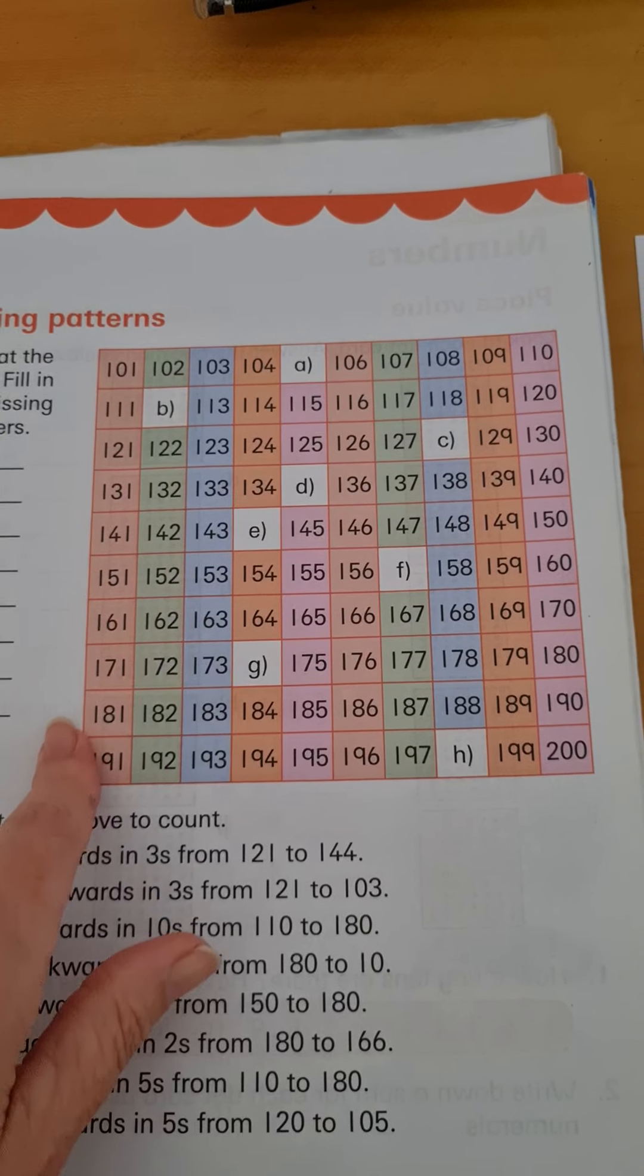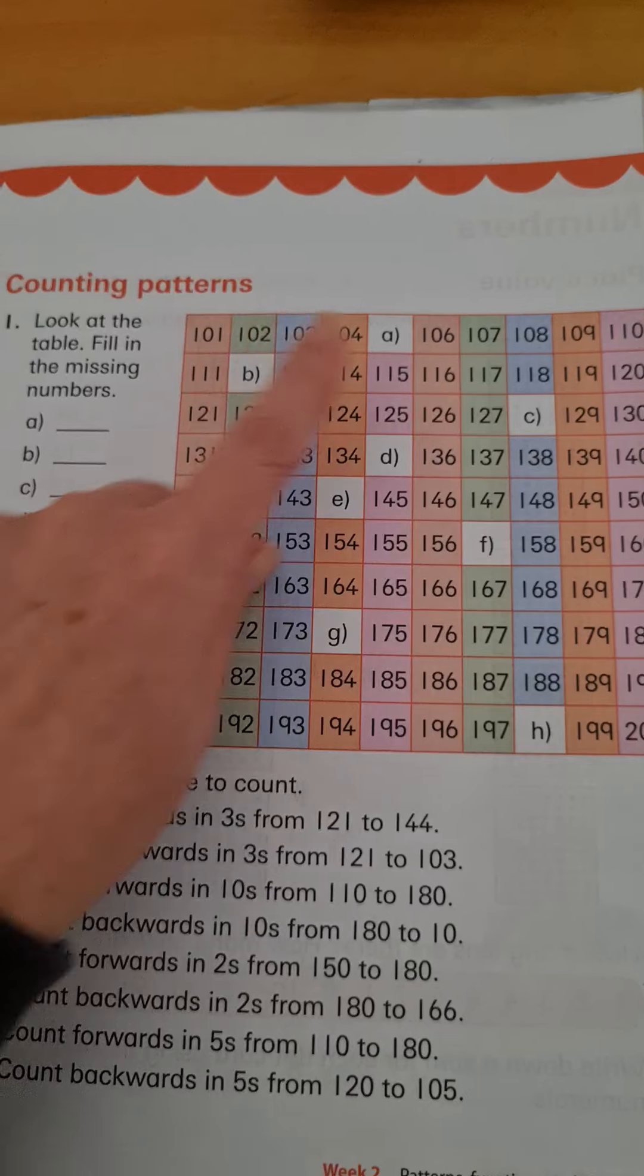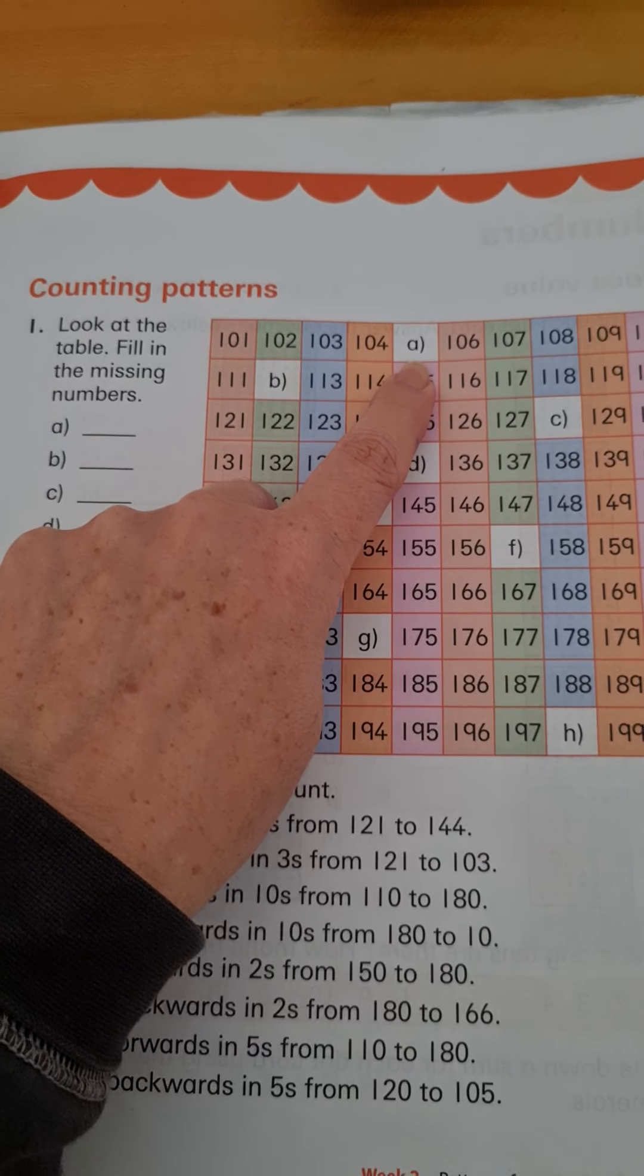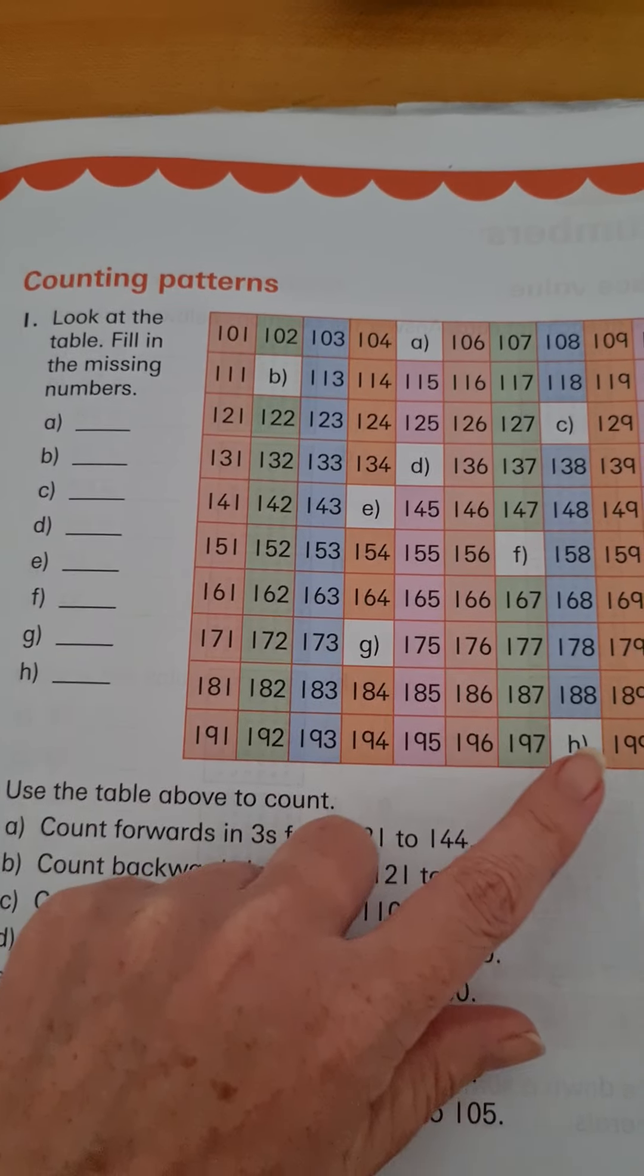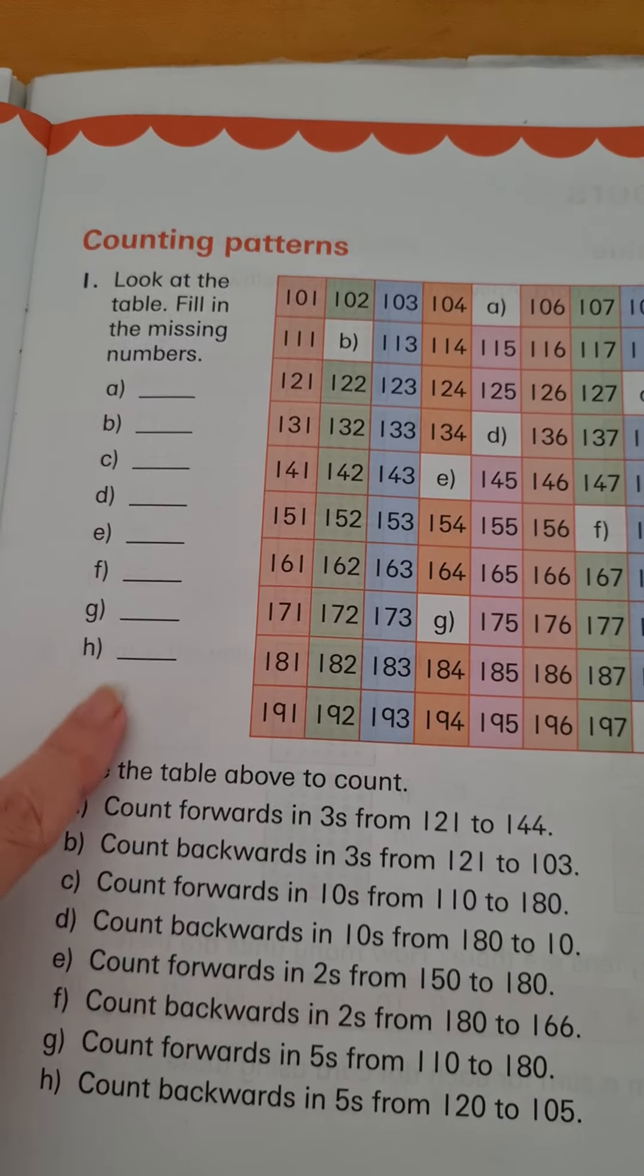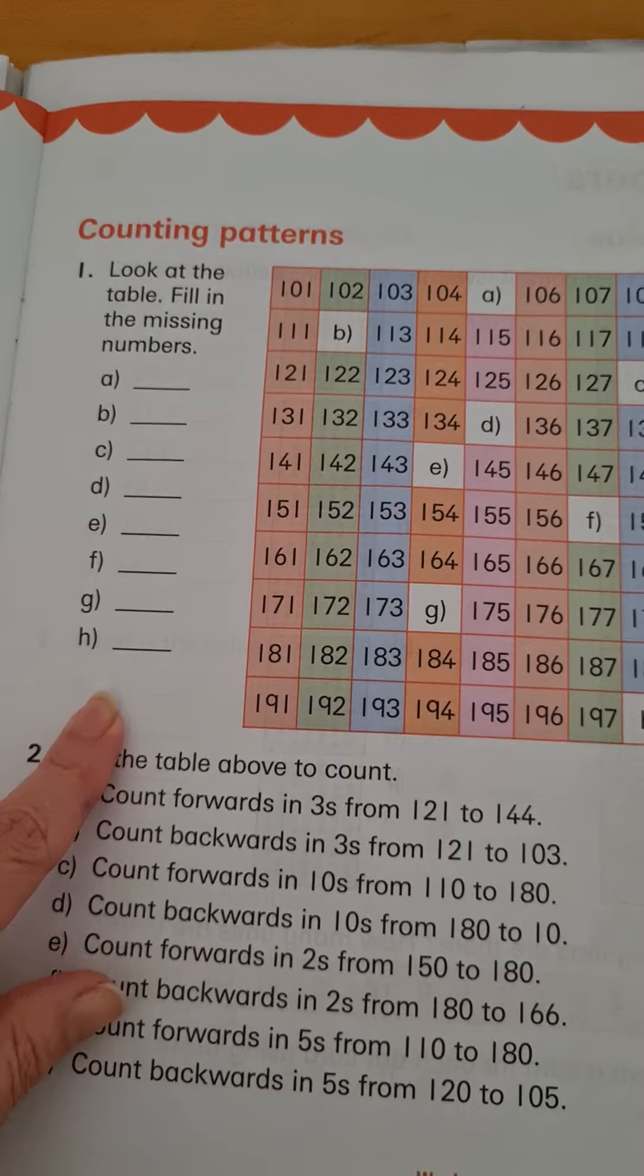Okay, this is the table. Can you see that it's got letter A on your book and letter A here? So it's asking you what number is missing for each of the letters A to H. You're not going to write it in the book, you're going to write it in your exercise book.